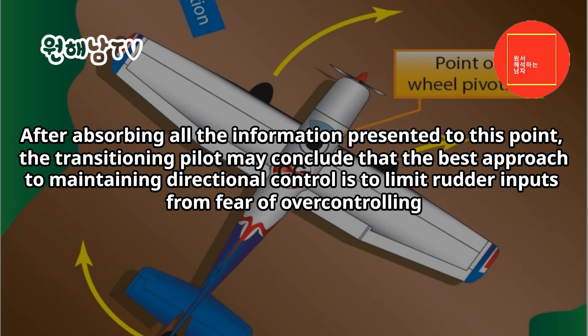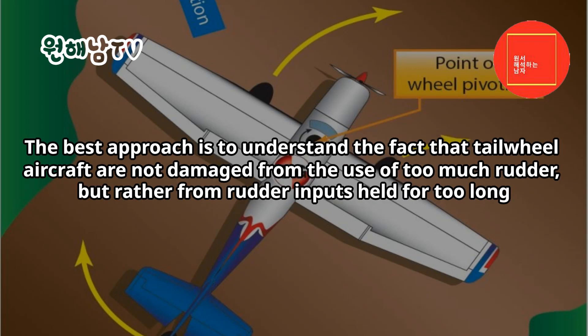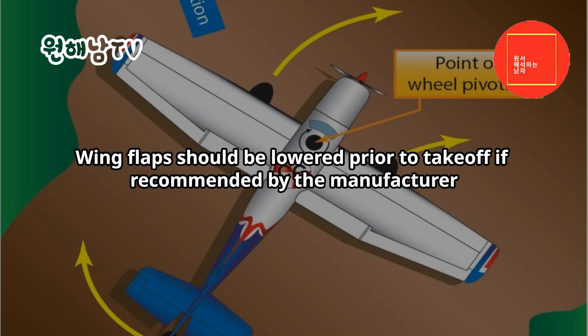After absorbing all this information, a transitioning pilot may conclude the best approach to maintaining directional control is to limit rudder inputs for fear of over-controlling. Although intuitive, this is an incorrect assumption. The disadvantages built into the tailwheel design sometimes require vigorous rudder inputs to maintain or retain directional control. The best approach is to understand that tailwheel aircraft are not damaged from using too much rudder, but rather from rudder inputs held for too long.